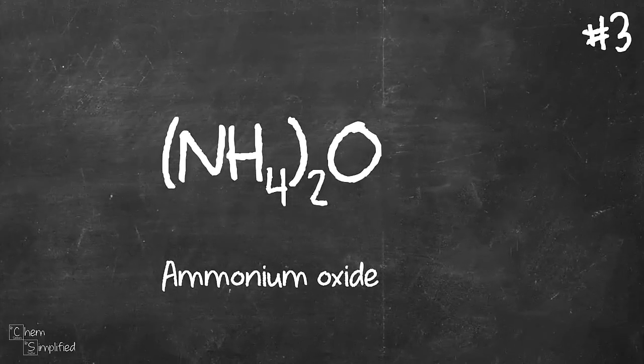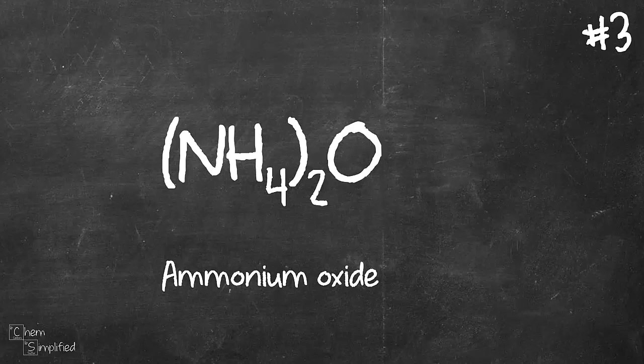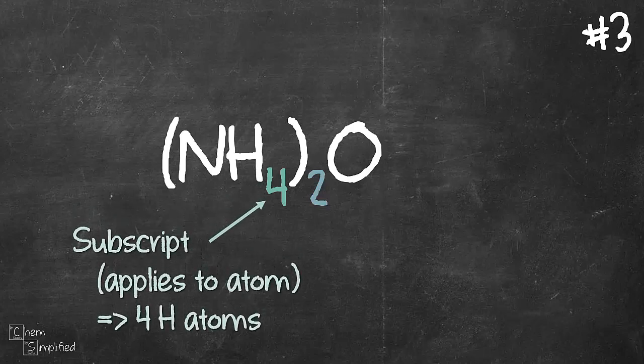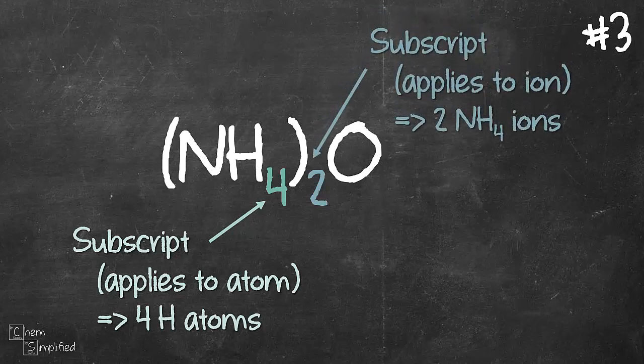Moving on to our third example, ammonium oxide, (NH4)2O. So in this formula, we have two types of subscripts. The 4 inside the bracket or parentheses only applies to the atom it's attached to, which is hydrogen. And that 2 outside the bracket, that applies to everything that is inside that bracket.